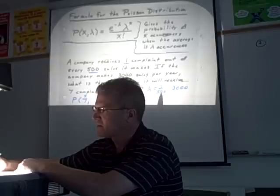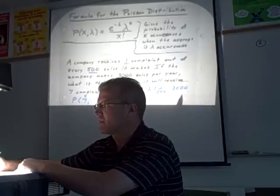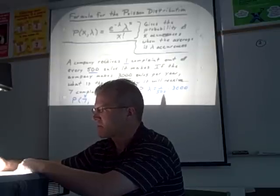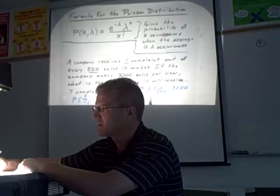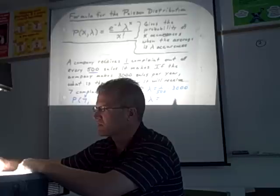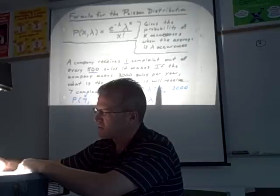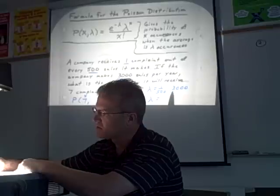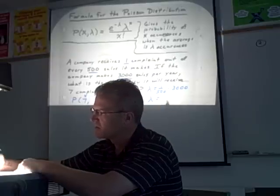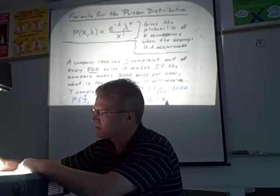So if we take one over 500 times 3,000, in other words, 3,000 divided by 500, that'll tell us the average number of complaints they should get on 3,000 sales. So if you multiply one over 500 times the total number of sales, you end up with six complaints on average.